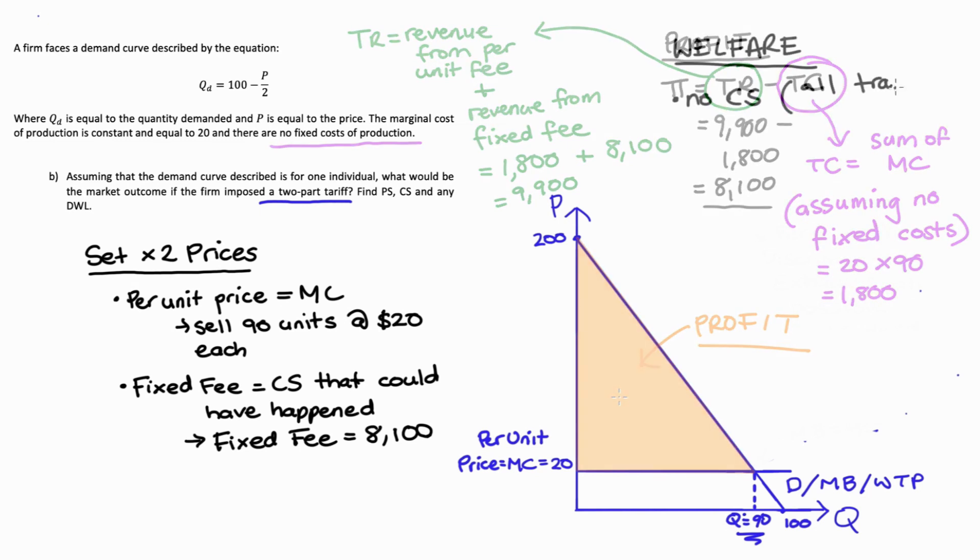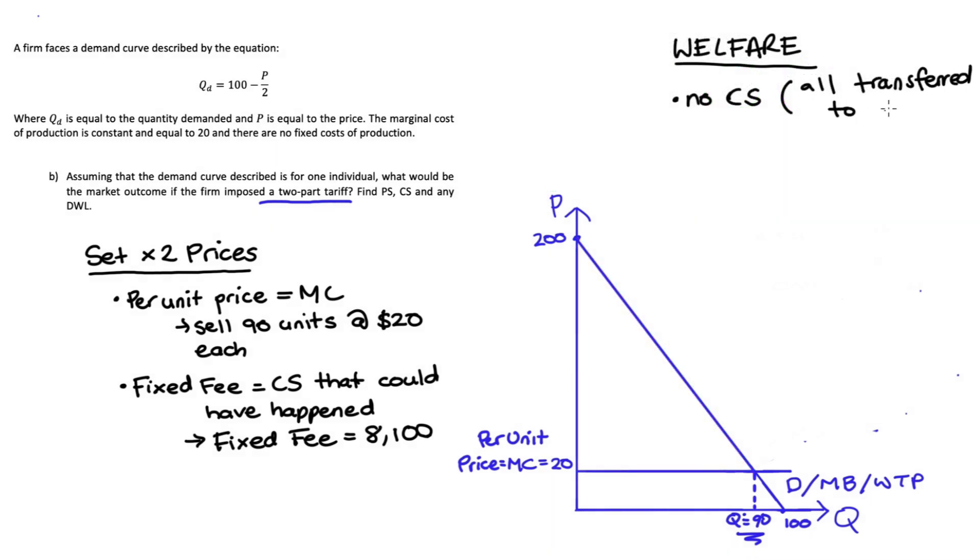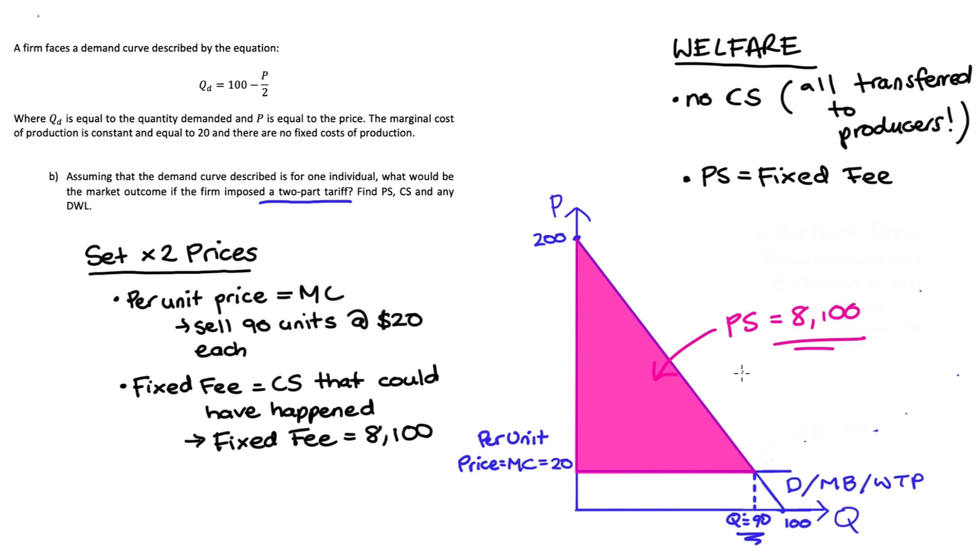In terms of welfare, there is no consumer surplus. That consumer surplus has all been given to the producer through that fixed fee, and that surplus just gets turned straight into producer surplus, so that area in pink. We know the value of that area is equal to 8,100. There is no other producer surplus in this scenario because our marginal cost is constant, so there's never any difference between the per unit price and the marginal cost. There is also no deadweight loss since we produced the efficient amount at 90, where marginal benefit equals marginal cost.